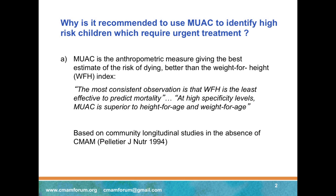This has been shown already more than 20 years ago by a series of community-based studies looking at the association between different anthropometric indices and the risk of death. These studies were reviewed in 1994 in an article in the Journal of Nutrition by David Pelletier, which states: 'The most consistent observation is that weight-for-height is the least effective index to predict mortality. At high specificity level, MUAC is superior to height-for-age and weight-for-age.'